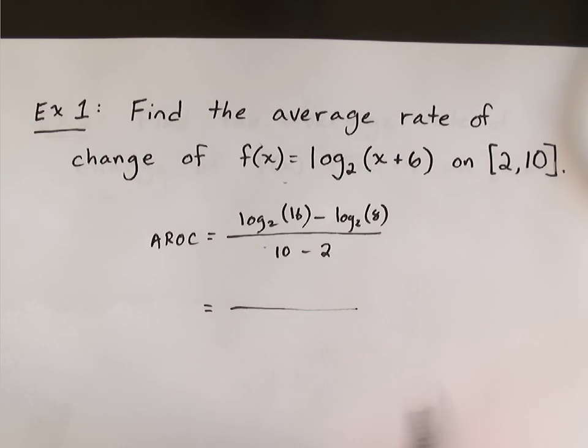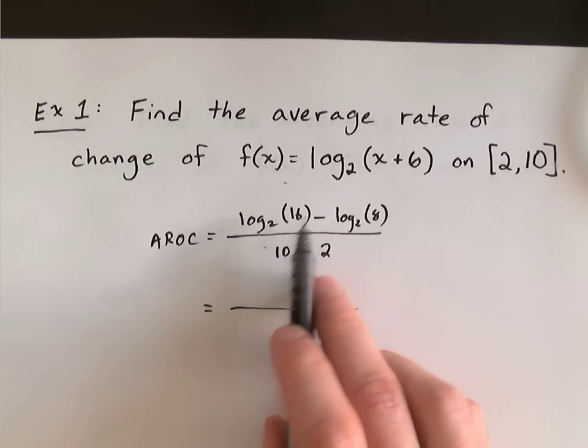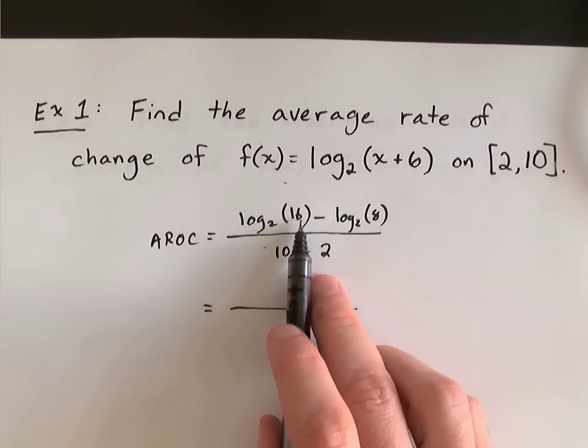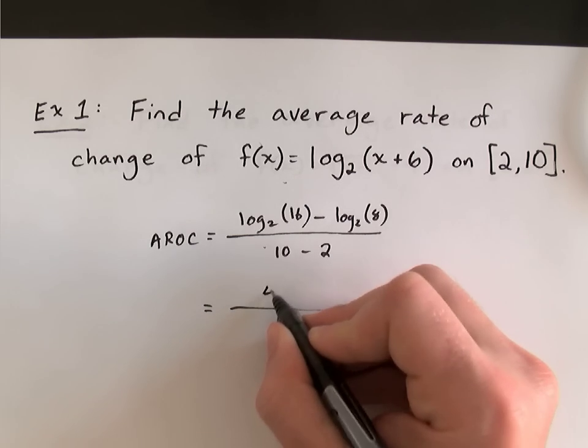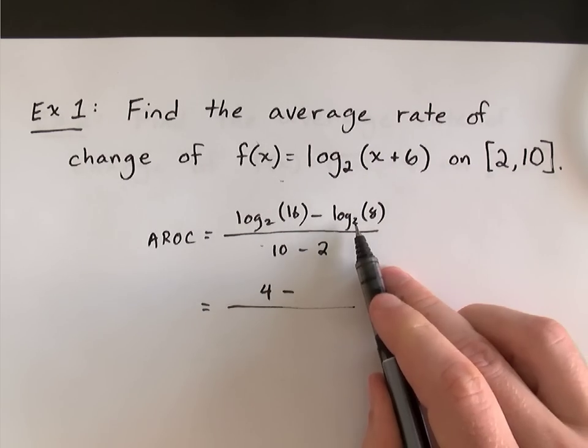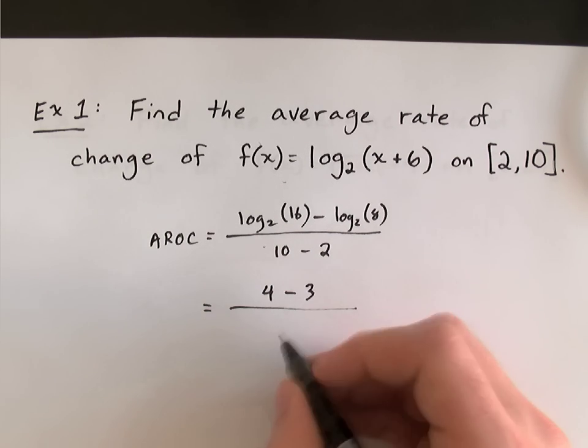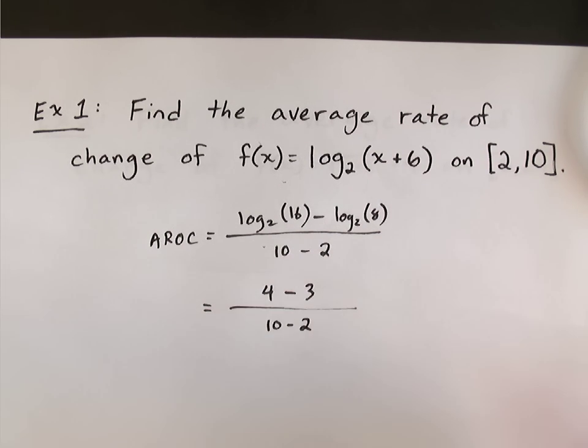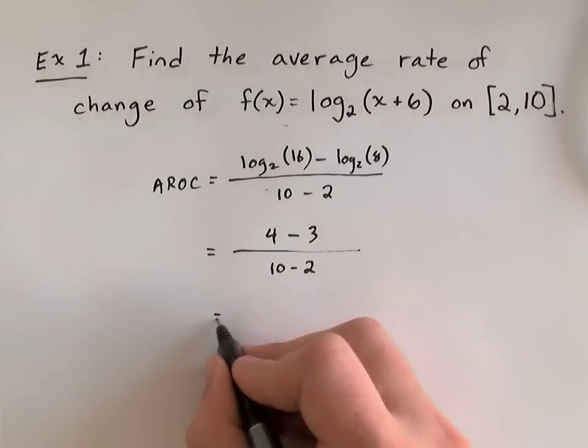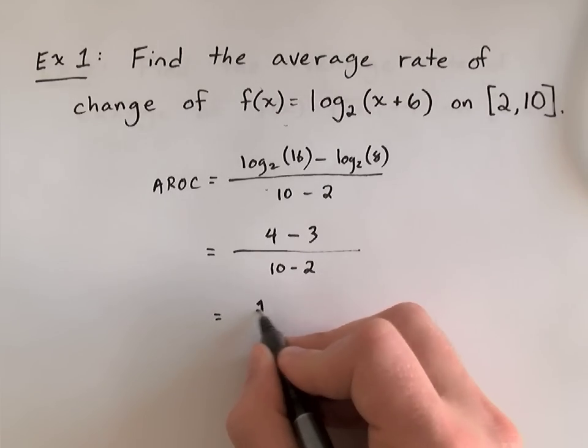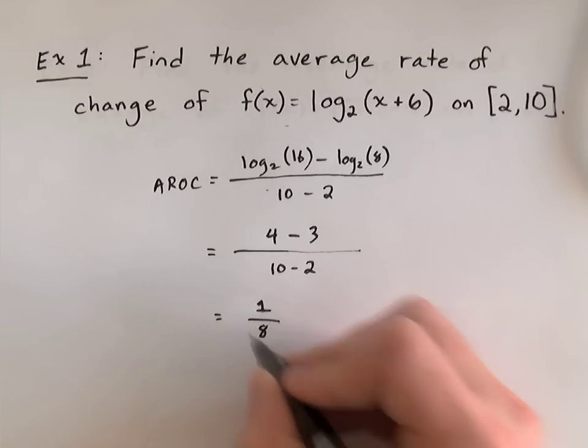Okay, and I can work out the numerator there, because log base 2 of 16 is asking the question, 2 to what power is 16? That's the fourth power. 2 to what power is 8? That's the third power. And then 10 minus 2, I'll work that out in the next step. So, 4 minus 3 is 1, and 10 minus 2 is 8, so there's my answer. 1/8.